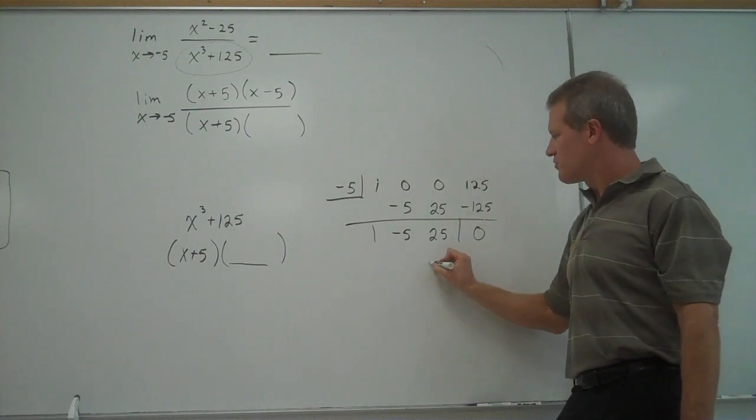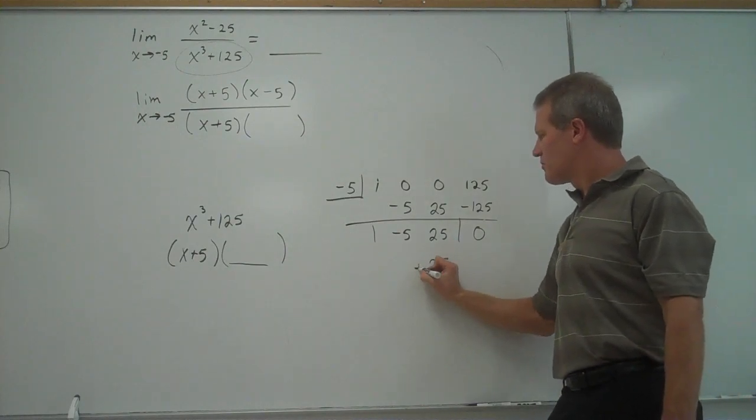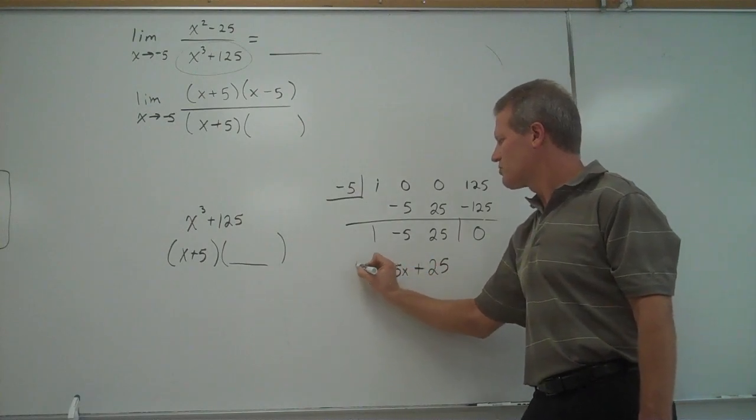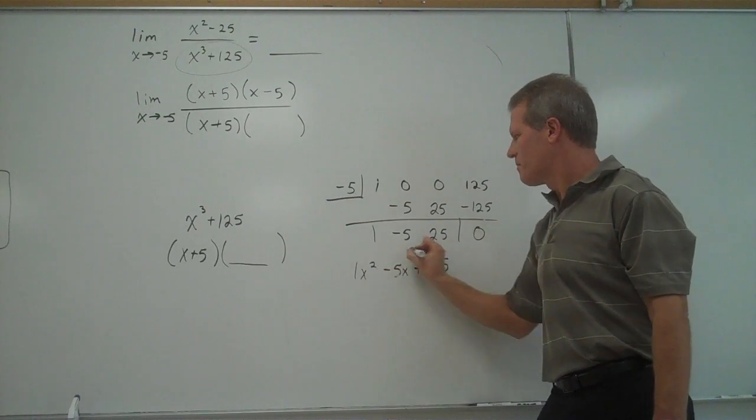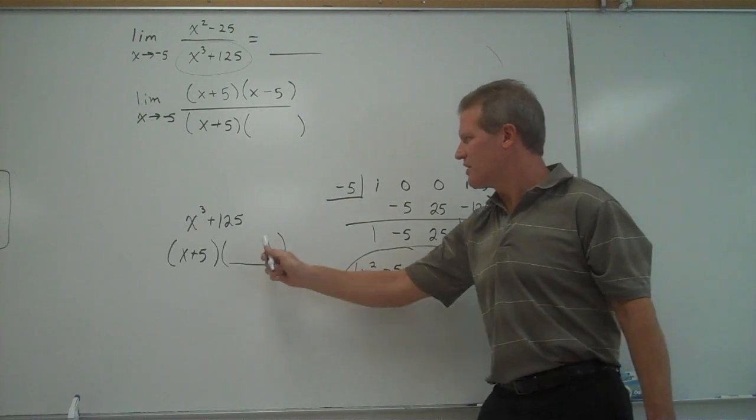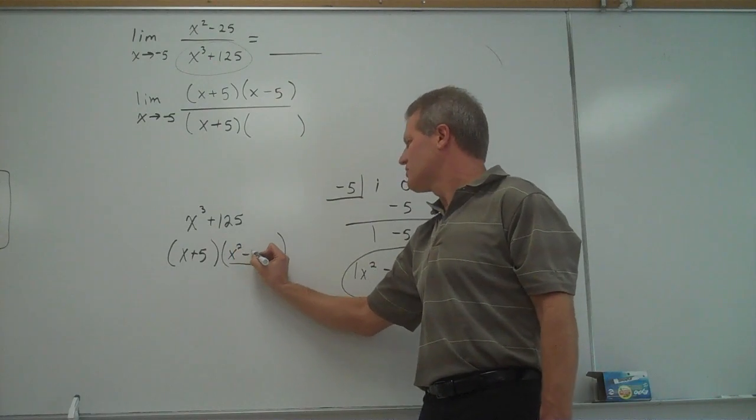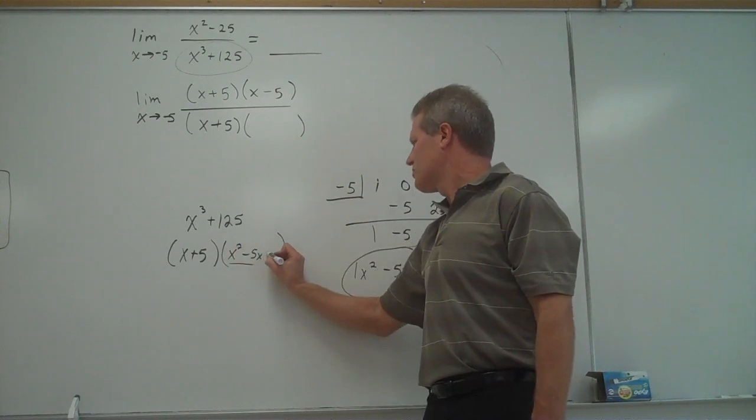Here's my constant of 25. My next term is negative 5x. My next term would be 1x squared. So by dividing, I figured out that that is my missing term, x squared minus 5x plus 25.